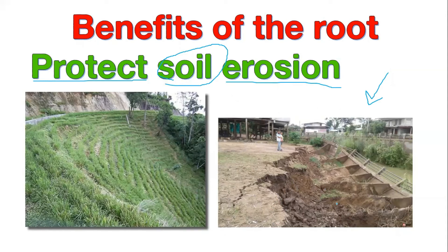The soil collapses and falls away. So how do we prevent this from happening? Humans grow plants and grass to protect the soil.